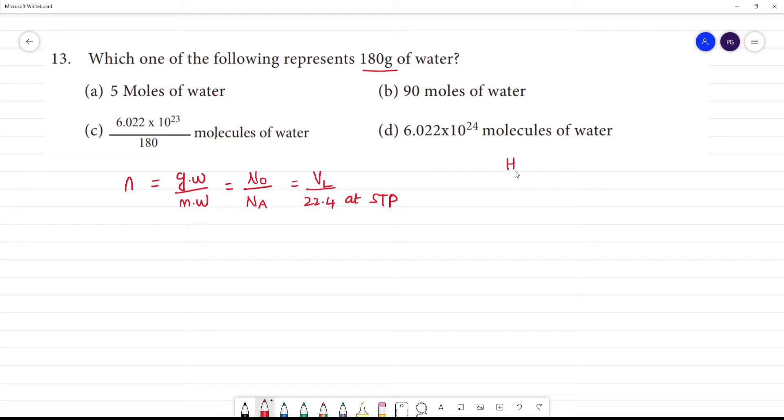The molecular weight of water is 2 into 1 plus oxygen 1 into 16. That equals 2 plus 16, which is 18. So molecular weight is 18.